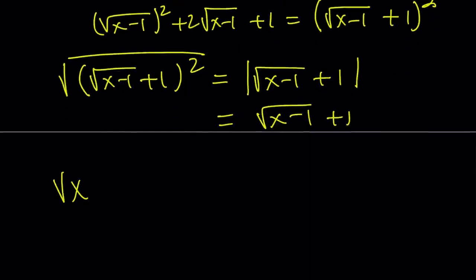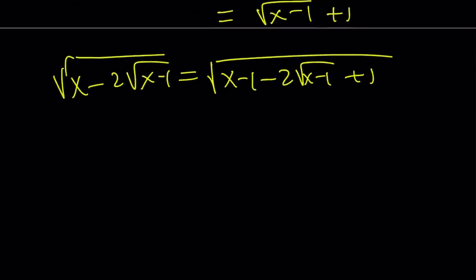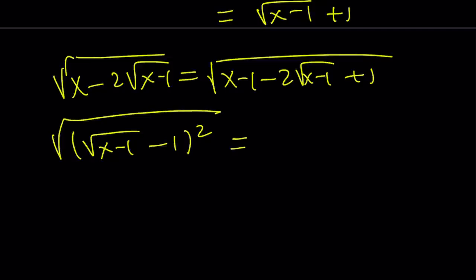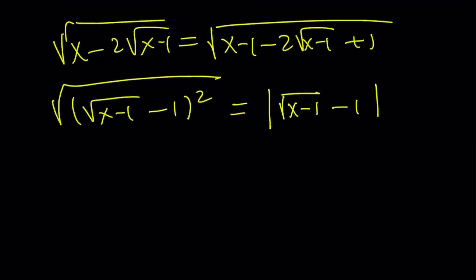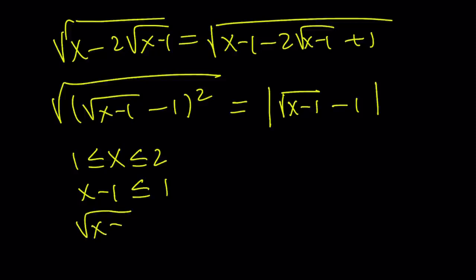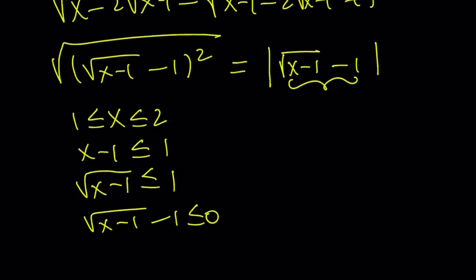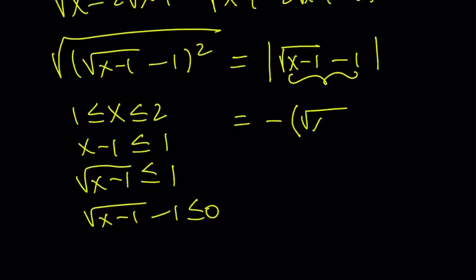By the same token, you can say that square root of x minus 2 times the square root of x minus 1 equals the square root of (√(x−1) − 1) quantity squared. But then you have to square root it, so this becomes the absolute value of √(x−1) minus 1. Now, since x is between 1 and 2, x minus 1 is less than or equal to 1, so √(x−1) is also less than or equal to 1. Therefore √(x−1) minus 1 is less than or equal to 0 — a non-positive quantity. So its absolute value is going to be its opposite, and we write it with a minus sign on the outside.